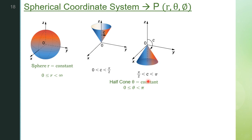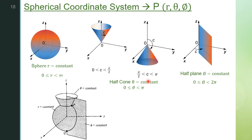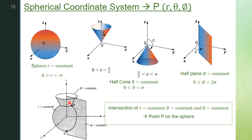The third coordinate φ = constant again represents a half-plane where the angle is measured from the positive x-axis, similar to φ in cylindrical coordinates. The range of φ is from 0 to 2π. The point of intersection of the r = constant, θ = constant, and φ = constant planes forms point P in the spherical coordinate system. In spherical coordinates, we have a radius and two angular measurements: θ and φ.